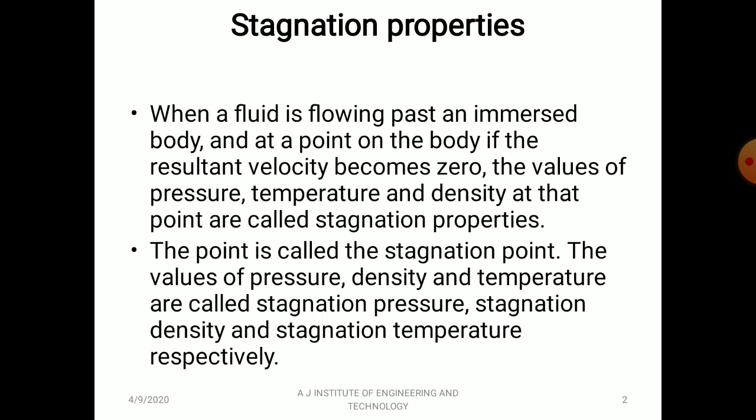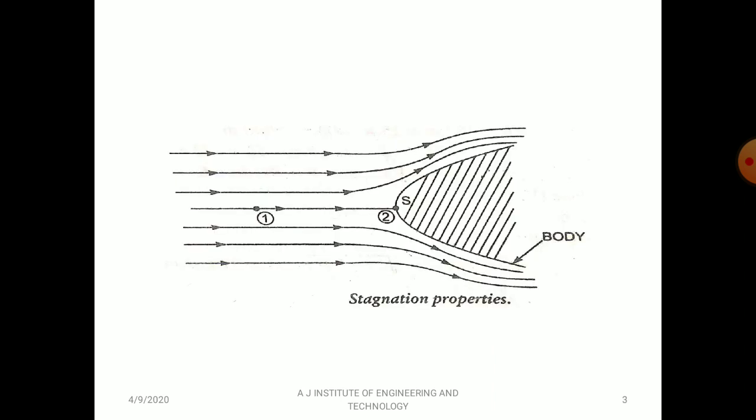The stagnation point is a point at which the resultant velocity is zero. The properties corresponding to that point — pressure, density, and temperature — are called stagnation properties.